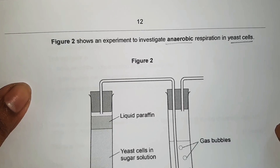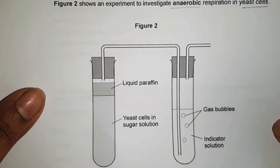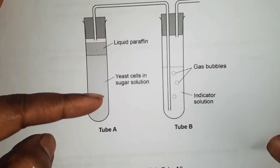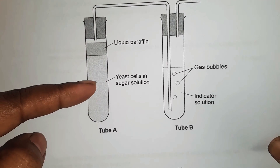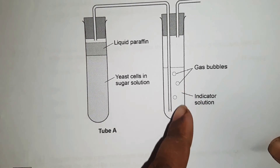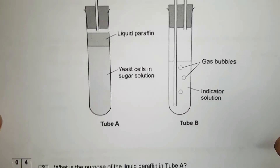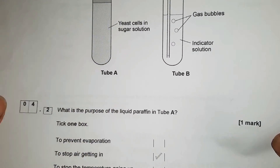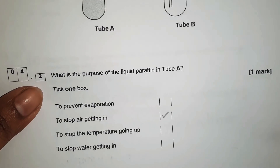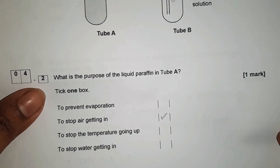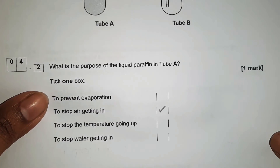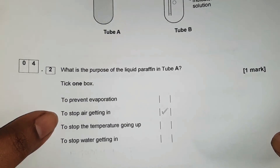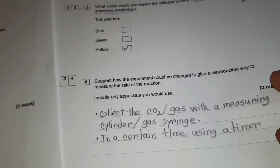Figure two shows an experiment to investigate anaerobic respiration in yeast cells. You can see tube A contains liquid paraffin, yeast cells in sugar solution, and gas bubbles; tube B contains an indicator solution. What is the purpose of the liquid paraffin in tube A? Tick one box — the answer is: to stop air getting in.